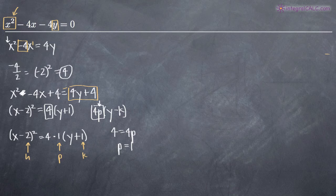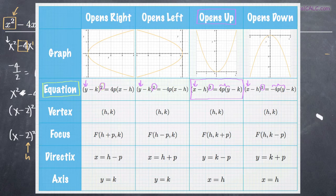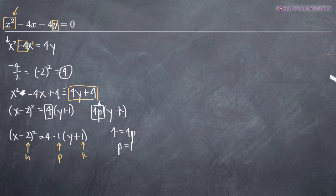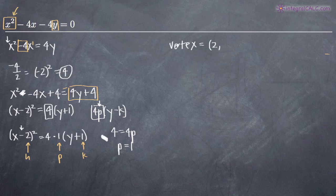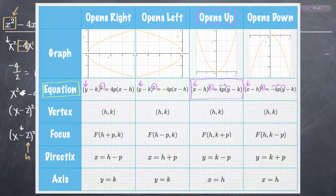Going back to the chart, since we're in the third column, the vertex is at (h, k). In our equation it's x minus h and y minus k. Because we have x minus 2, h equals 2. Because we have y plus 1, k must equal negative 1 to match the y minus k format. So our vertex is at (2, negative 1).